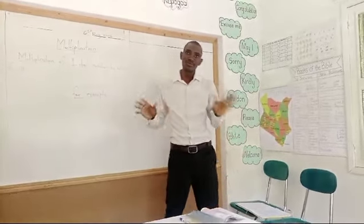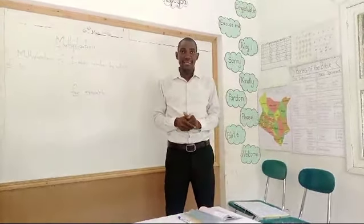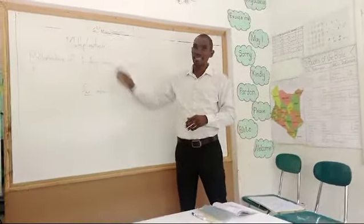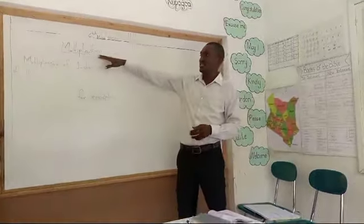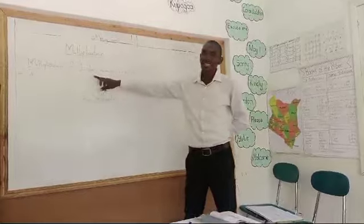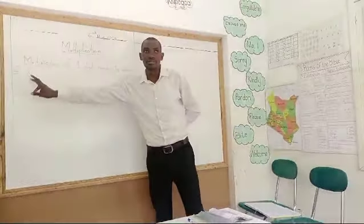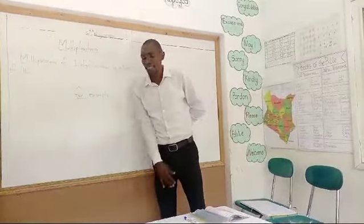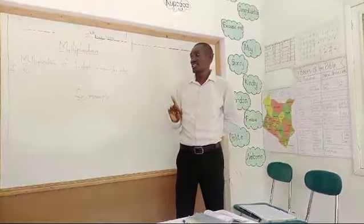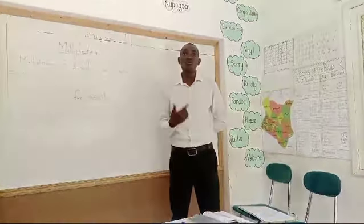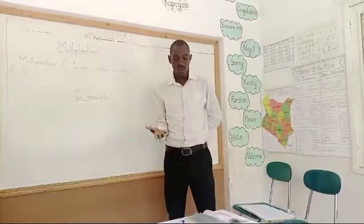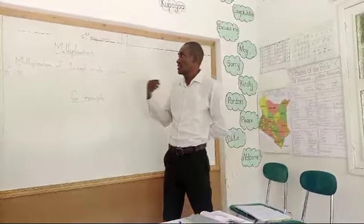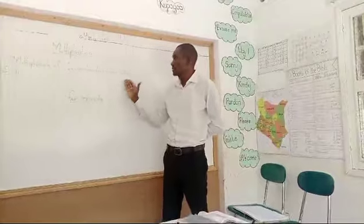Hello children, how are you? I'm Teacher King and I'm here to teach you about multiplication. We are going to learn about multiplication of one digit number by multiples of 10. One digit numbers are numbers like two, three, four, five, six, seven, eight, nine. Those are the one digit numbers. Now, multiples of 10.